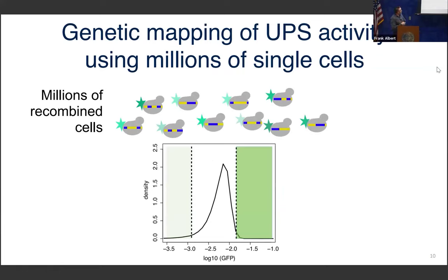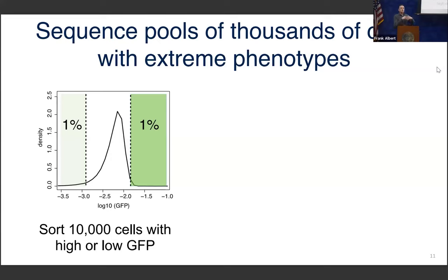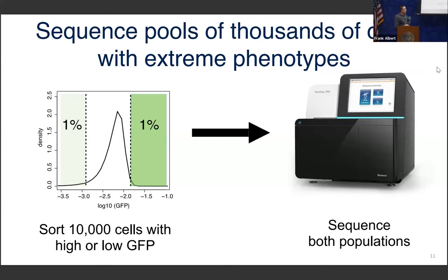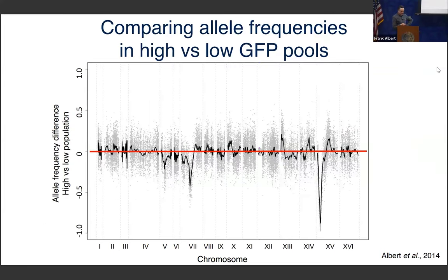We take our population — all carrying the GFP tag — and run them through a cell sorter, getting a distribution. Now comes the key part, and this method will be shared for everything in the talk. The method is based on bulk segregant analysis, where we take extreme individuals — say the 1% highest or 1% lowest GFP abundance — and use FACS to collect 10,000 to 20,000 cells from those individuals. To get that many cells at this highly stringent selection, you need to be looking at hundreds of thousands to millions of cells, which is where high statistical power comes from. We then sequence both populations whole-genome.